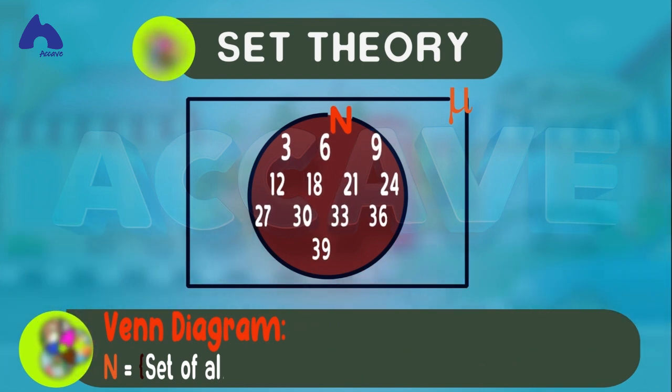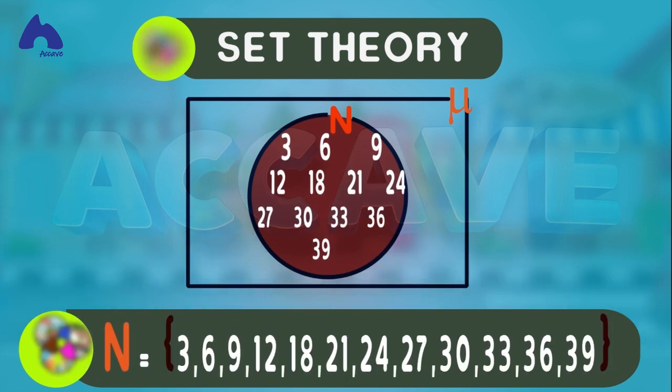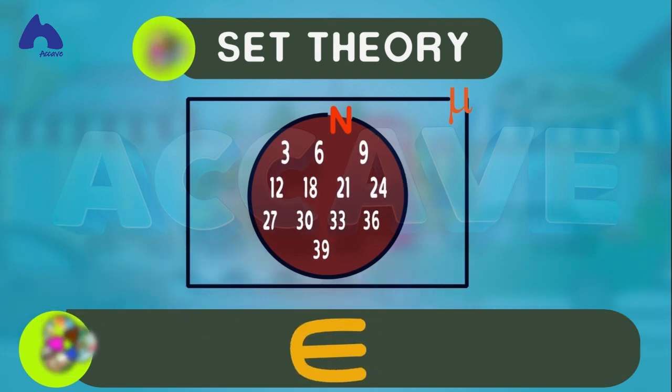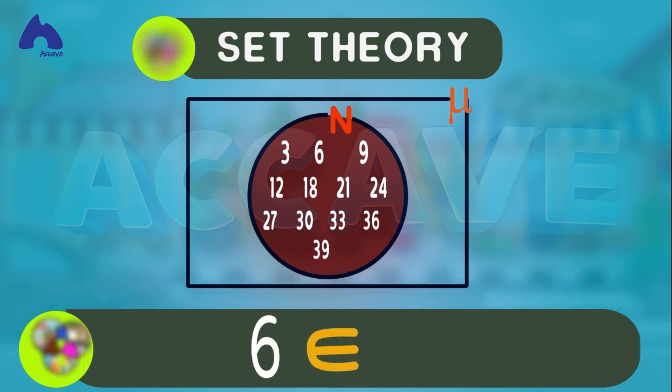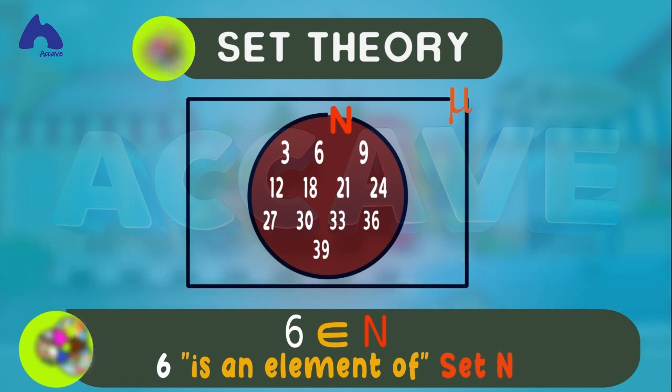As we have seen, the members of a set are called elements. And this symbol is used to denote membership. So, we can read this as 6 is an element of the set of even numbers.